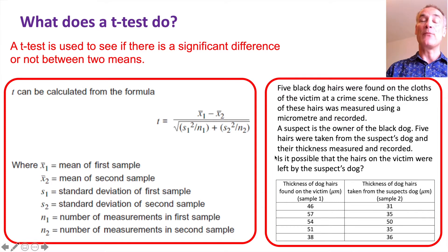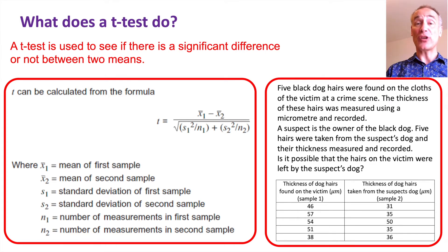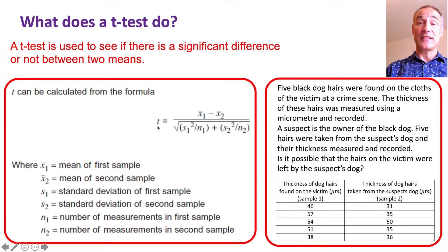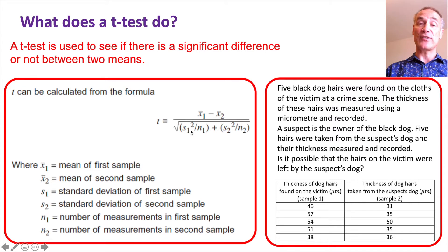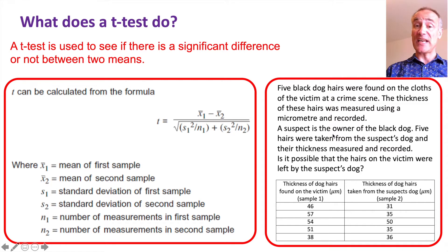We use this equation, which looks frightening at first but is fine once you're used to it — and it's given in your exam so you don't need to remember it, just understand what each symbol means. To calculate the t value: take the mean of the first sample minus the mean of the second sample, divided by the square root of the standard deviation of sample one squared divided by n1, plus the standard deviation of sample two squared divided by n2.